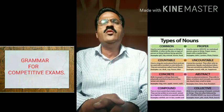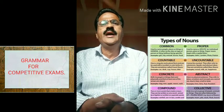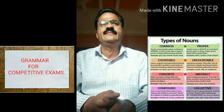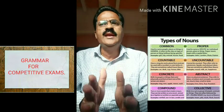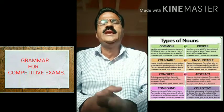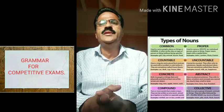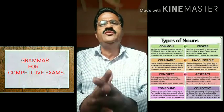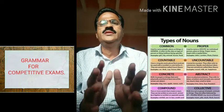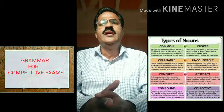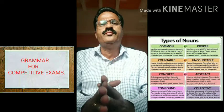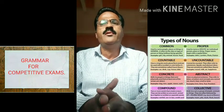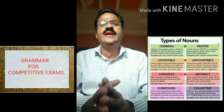Possessive nouns convey ownership and often consist of short phrases. A collective noun describes a group of things and it may be singular or plural depending on how it is used. A singular collective noun refers to a group that functions as one unit or performs the same action at the same time.